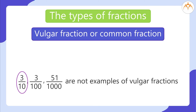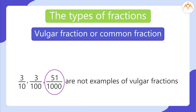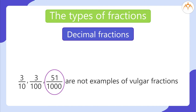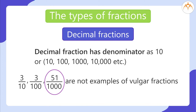3 divided by 10, 3 divided by 100, and 51 divided by 1000 are not examples of vulgar fractions — these are decimal fractions. A decimal fraction has a denominator of 10, 100, 1000, 10,000, etc.